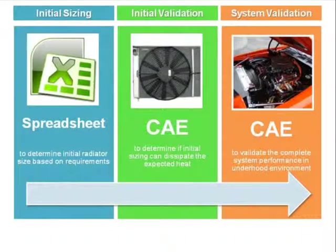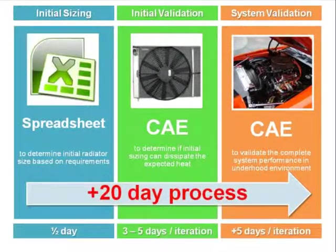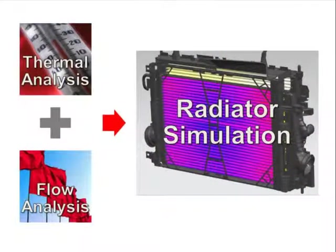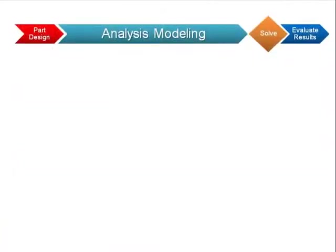Although CAE in general is much faster for evaluating a number of designs than trial and error with physical tests, the traditional radiator analysis process can take as long as 20 days or more, from initial design through final system validation. This length of time is partially because radiator simulation is complex, involving coupling of fluid and thermal analyses. But the bulk of the time is devoted to just building the analysis model.